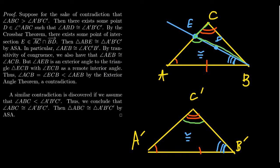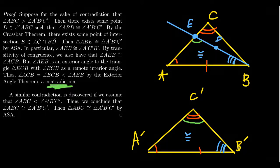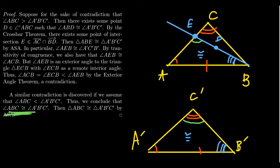By transitivity of congruence — since angle ACB is congruent to angle A'C'B' and angle AEB is congruent to angle A'C'B' — we get that angle AEB is congruent to angle ACB. But in triangle ECB, the angle AEB is an exterior angle and angle ECB is a remote interior angle. By the Exterior Angle Theorem, the exterior angle must be strictly greater than the remote interior angle — yet we just showed they are congruent. That is a contradiction.